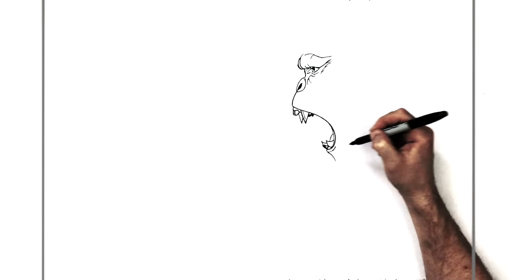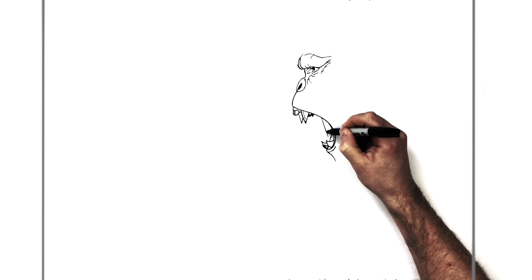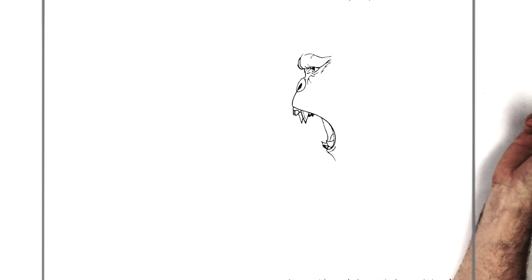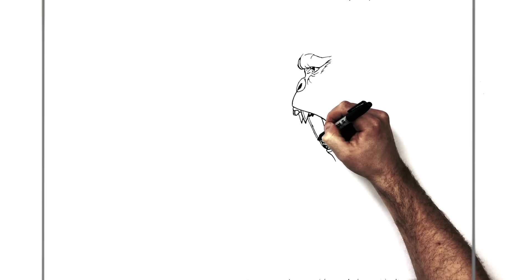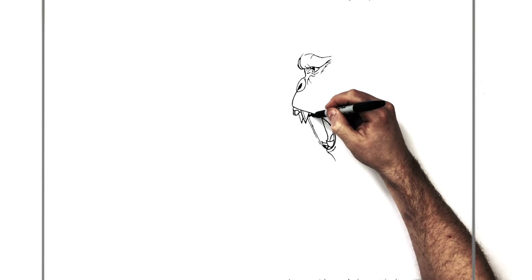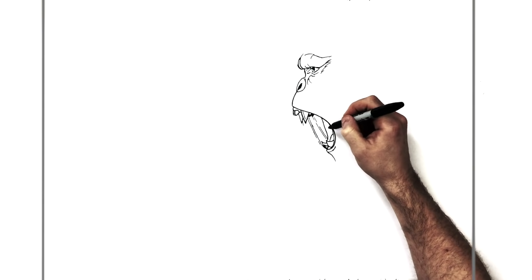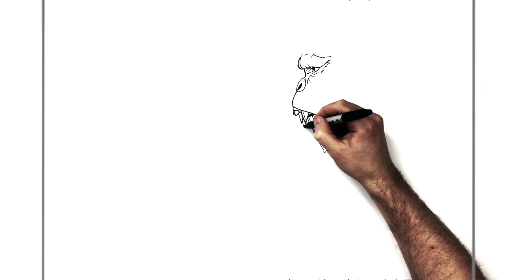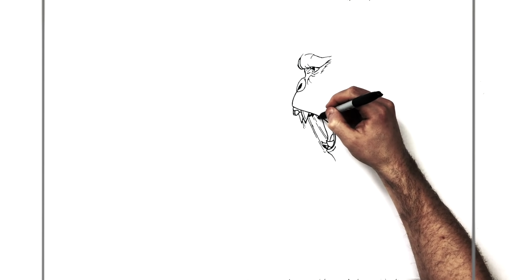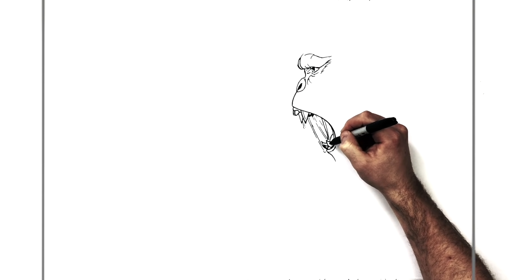His tongue sticks out at the back there, and his cheek on the other side is sort of visible on the other side of his mouth. In true monster style, we've got some drool coming down his mouth — loads of space and stuff coming down from his mouth. Maybe another line just inside for his tongue.